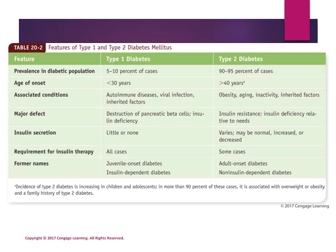In type 2 diabetes, insulin secretion may be normal, increased, or decreased. In some cases insulin therapy is required. Type 2 diabetes used to be called adult-onset diabetes or non-insulin-dependent diabetes, but we don't call it that anymore because the incidence is increasing among children and adolescents. In more than 70 percent of cases in children and adolescents, type 2 diabetes development is associated with overweight or obesity and a family history of type 2 diabetes.